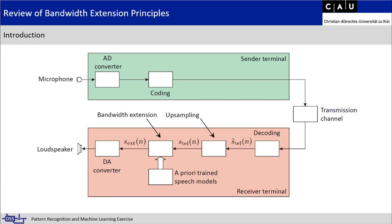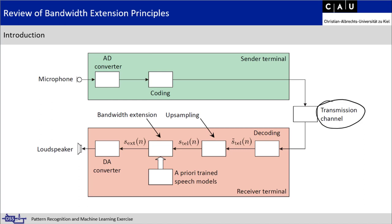This lecture and exercise is based on the problem of transmitting a speech signal over a band-limited channel and extending the received signal afterwards with bandwidth extension. To explain this problem, we have a diagram. On the top half, we have the sender terminal that records a microphone signal, converts the analog signal to the digital domain with an AD converter, and then applies some coding to the signal.